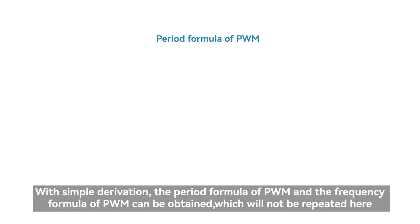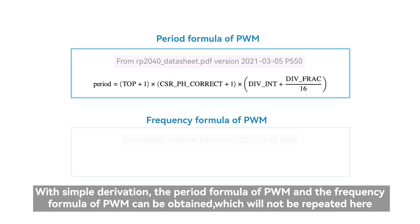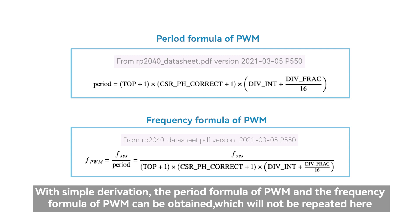With simple derivation, the period formula of PWM and the frequency formula of PWM can be obtained, which will not be repeated here.